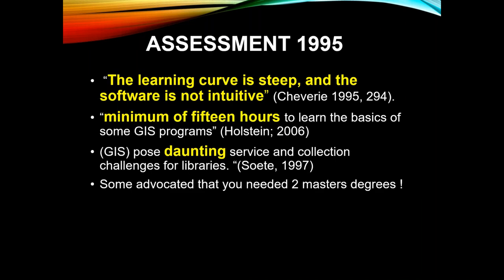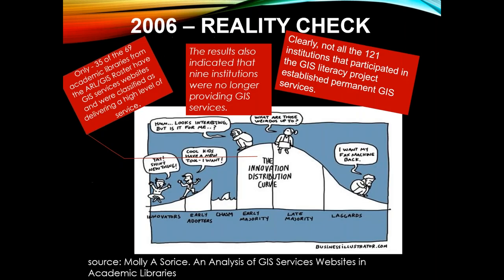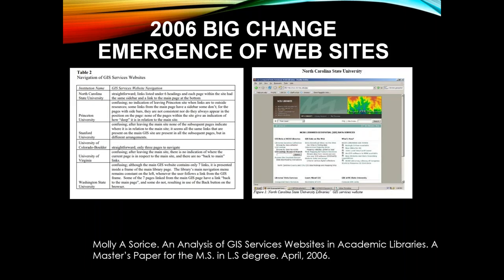A major assessment in 1995 indicated that the learning curve was very steep for librarians. Often it would take a minimum of 15 hours or more to get some basic function done, and in many cases this was daunting. People in the literature at that time were advocating that you needed two master's degrees in order to actually provide services. Things don't move along in a nice steady progression — some organizations that started with the GIS Literacy Project never established permanent GIS facilities in their libraries.